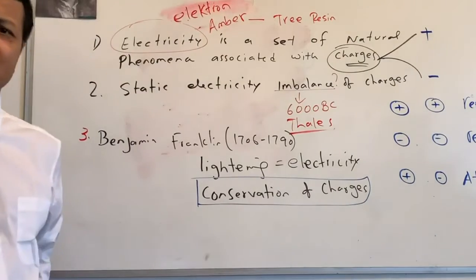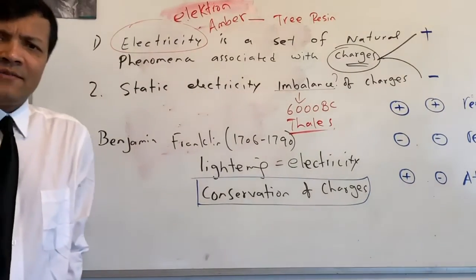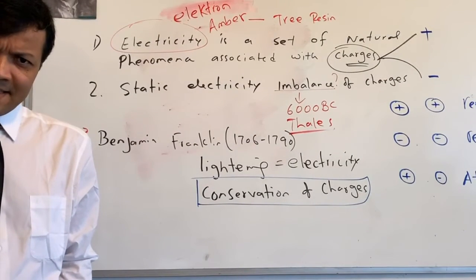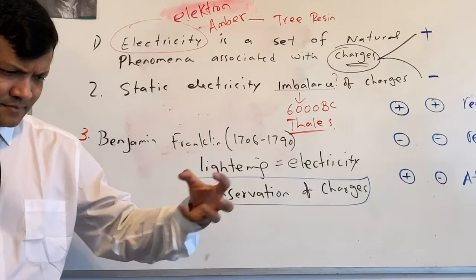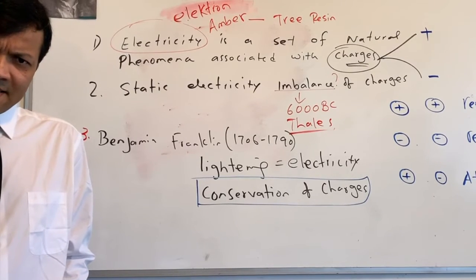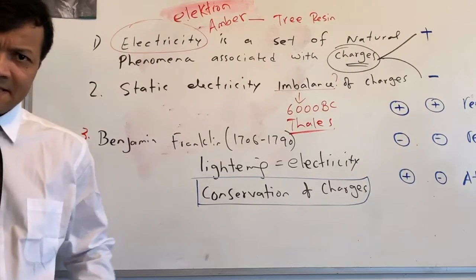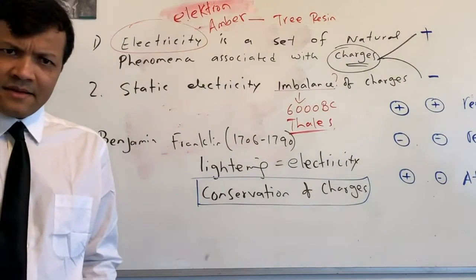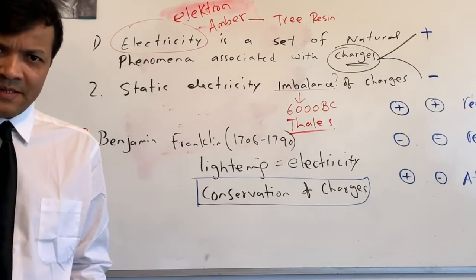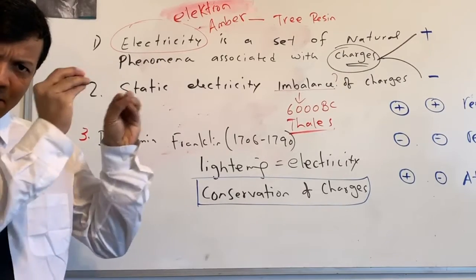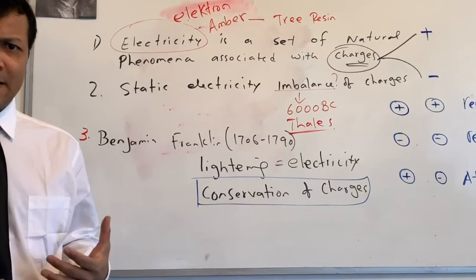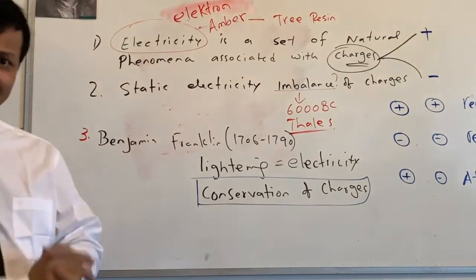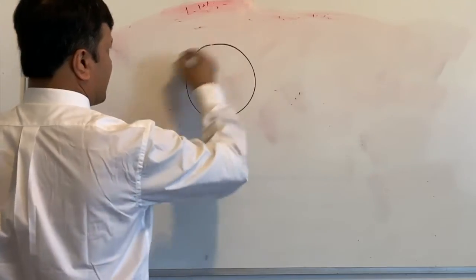What did we learn today? We learned about static electricity and its connection with electricity. Lightning is an example of static electricity. We also learned that Benjamin Franklin was the first person who envisioned that it is possible to harness the power of static electricity in the sky to create a light bulb.